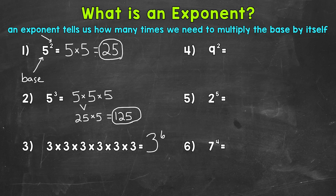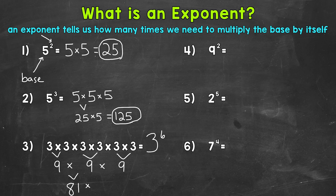Let's see what this equals by multiplying everything here. There are multiple ways we can think through this. I'm going to pair up all of our 3's: 3 times 3, 3 times 3, and 3 times 3. We know that 3 times 3 is 9, so let's start breaking this down. 9 times 9 times 9 — well, 9 times 9 is 81, and 81 times 9 gives us a final answer of 729. So 3 to the sixth power equals 729.